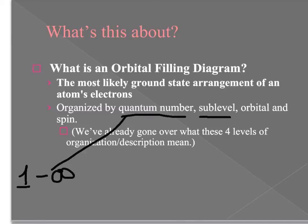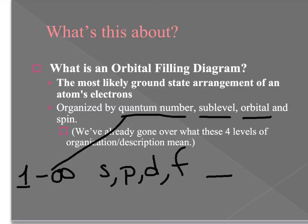Sublevels are designated S, P, D, and F, and they are specific regions within the electron cloud with very distinct shapes. Within each sublevel you find a certain number of orbitals. An orbital is the actual region where you're going to find an electron, and we represent orbitals with horizontal lines.